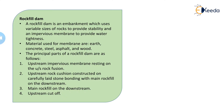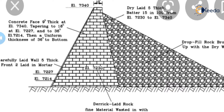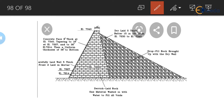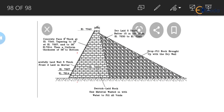The principal parts of the Rock Fill Dam are as follows. The first is the upstream impervious membrane. You can see this diagram — here on the upstream side you can see the upstream impervious membrane resting on the upstream rock cushion. This thinner part shown on the upstream side is nothing but the upstream impervious membrane, and this membrane is resting on the upstream rock cushion.